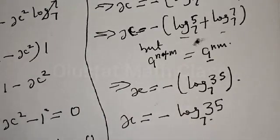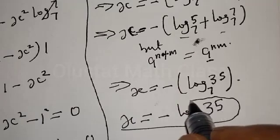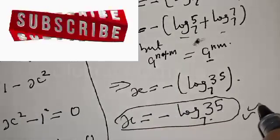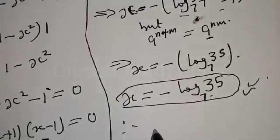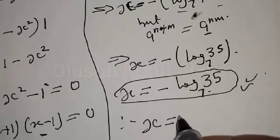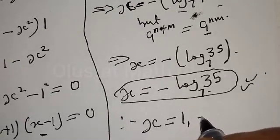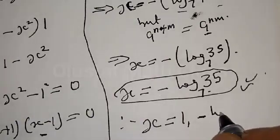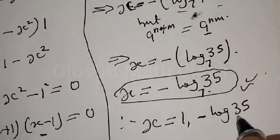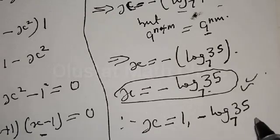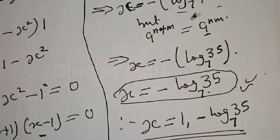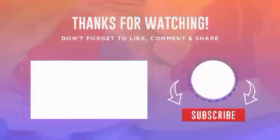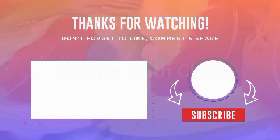Therefore the corresponding values of x are x = 1 and x = minus log₇35. If you enjoyed the class, please don't forget to like, share, comment and subscribe. Thank you.